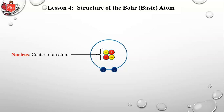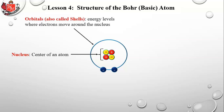Let's look at the structure of a basic Bohr atom. A hundred years ago this was the most advanced model; now it's a simplified version we use to study chemistry. The center of the atom is called the nucleus — unlike the nucleus of a cell, it's not a pouch with a wall; it's simply the name for the center of the atom.